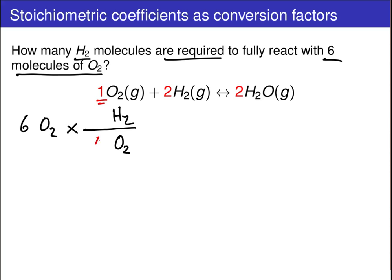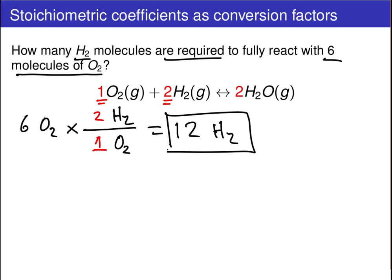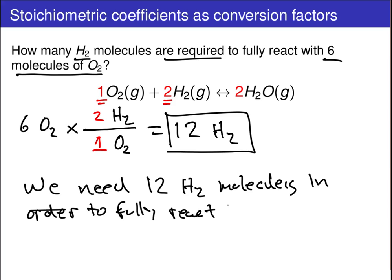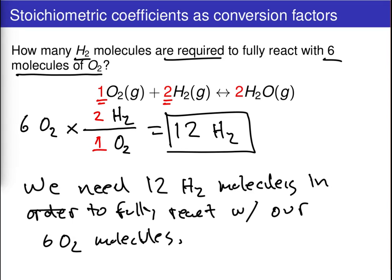We can see there's a stoichiometric coefficient of 1 in front of the oxygen and 2 in front of the hydrogen. Carrying out this multiplication, we find that we in fact need 12 H2 molecules in order to fully react with our six O2 molecules. The take-home message is the use of these stoichiometric coefficients to form the conversion factor.